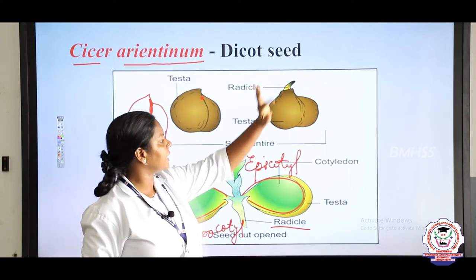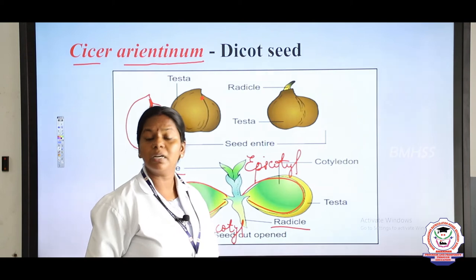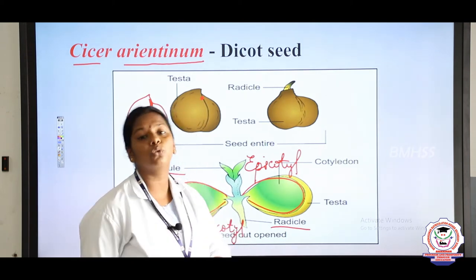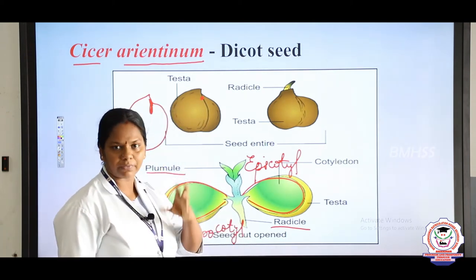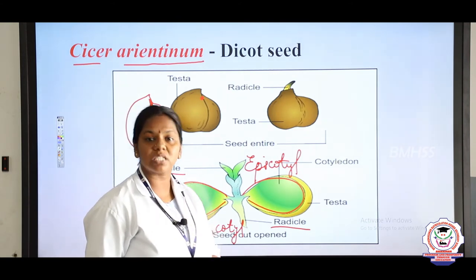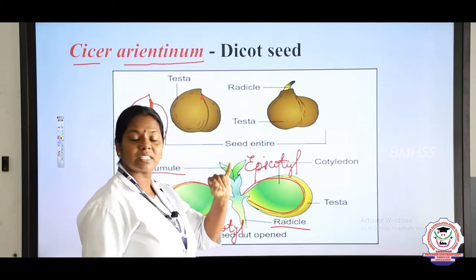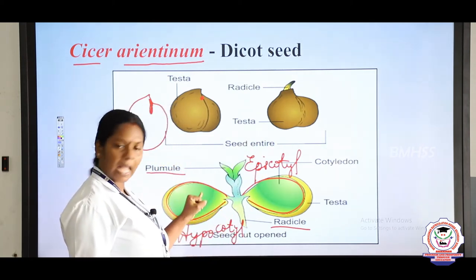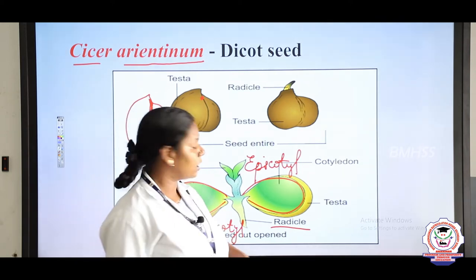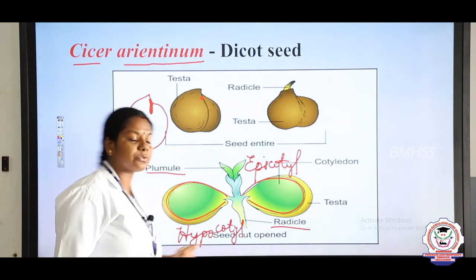In Cicer arietinum, the outermost covering — the integuments — become the testa and tegma. Testa is the outermost covering, brown in color, and tegma is the innermost cover. The structures discussed are: funicle, hilum, micropyle, testa, tegma, plumule, and radicle.